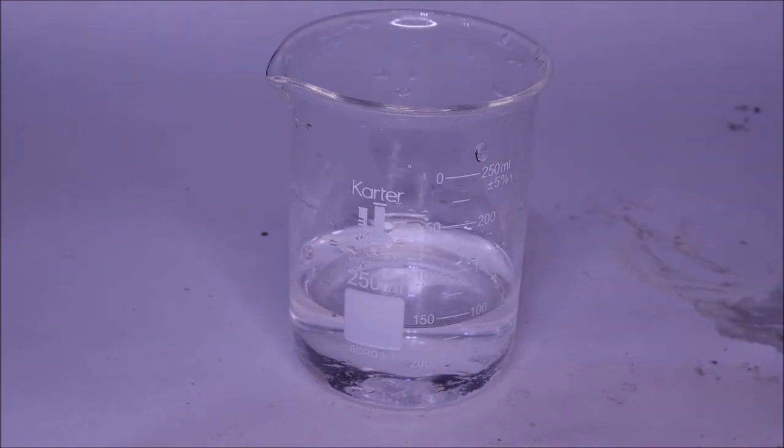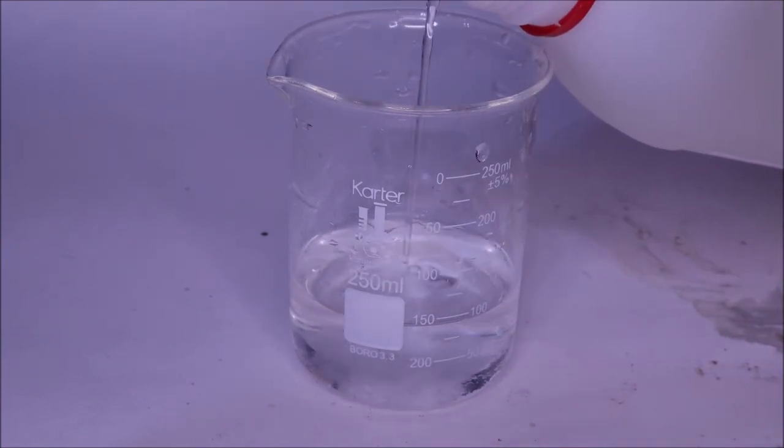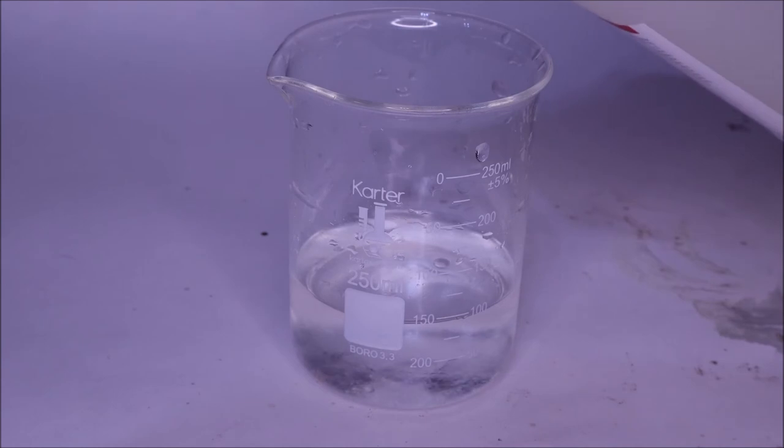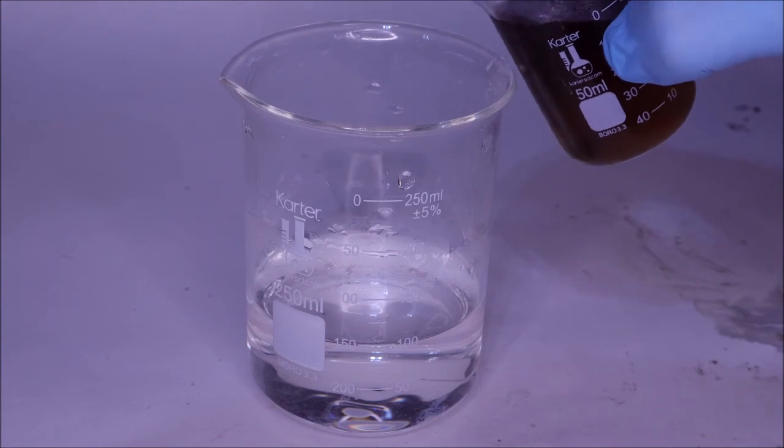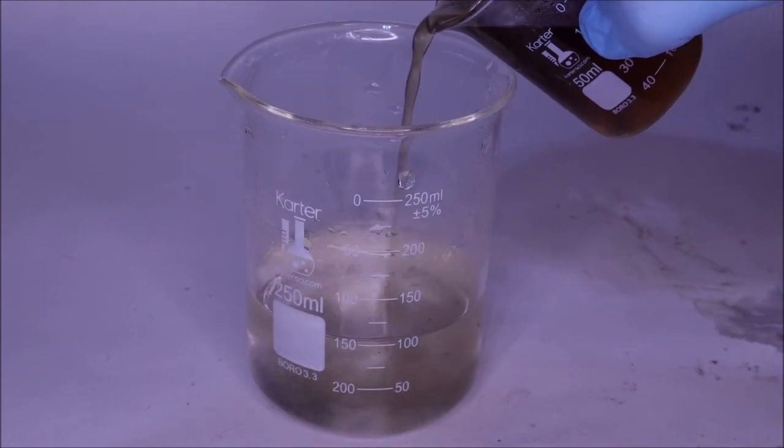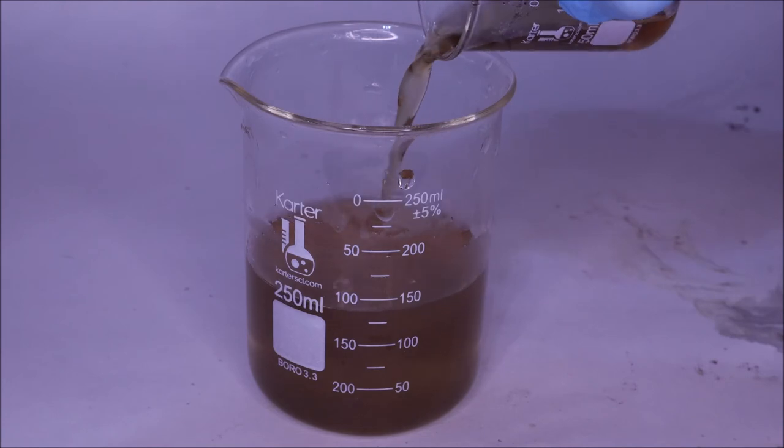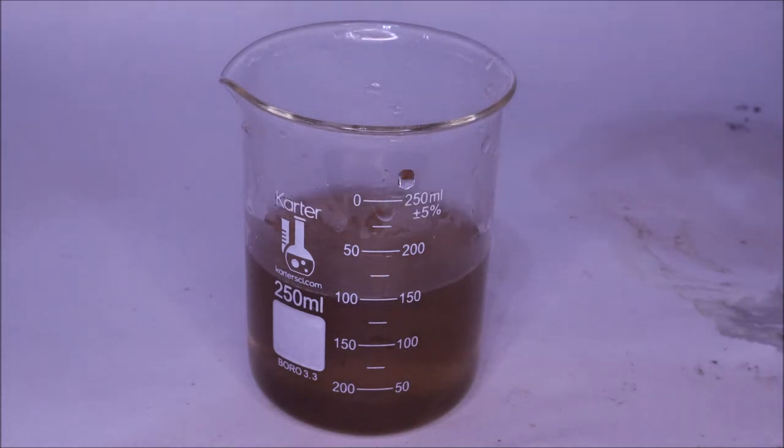I then prepared an acidic solution to add to the bottom layer in order to try and protonate those amino acids back to their acidic forms. When I added the brown bottom layer, well it looked about the same as it did before, which is kind of what I expected.